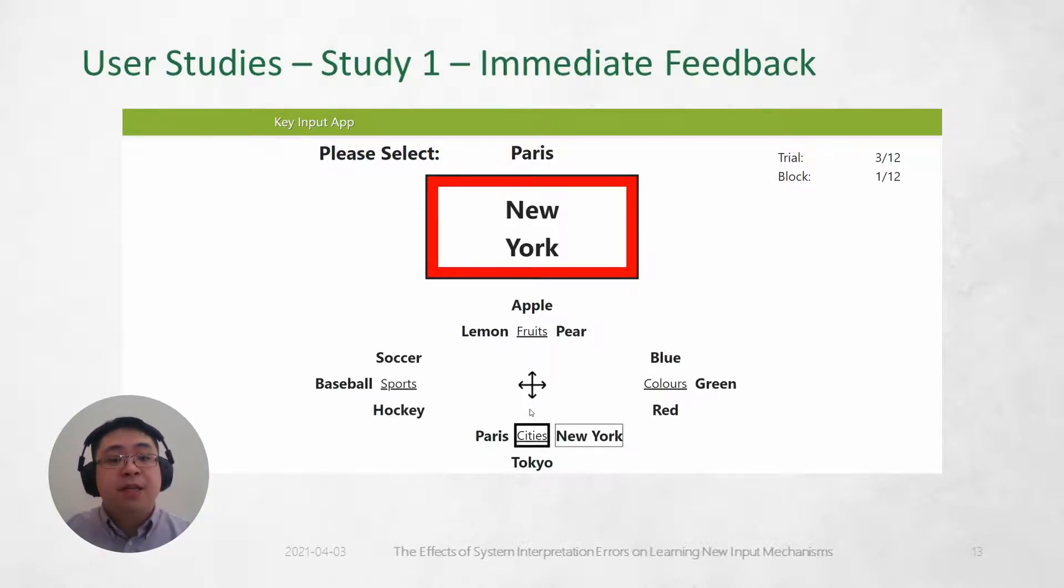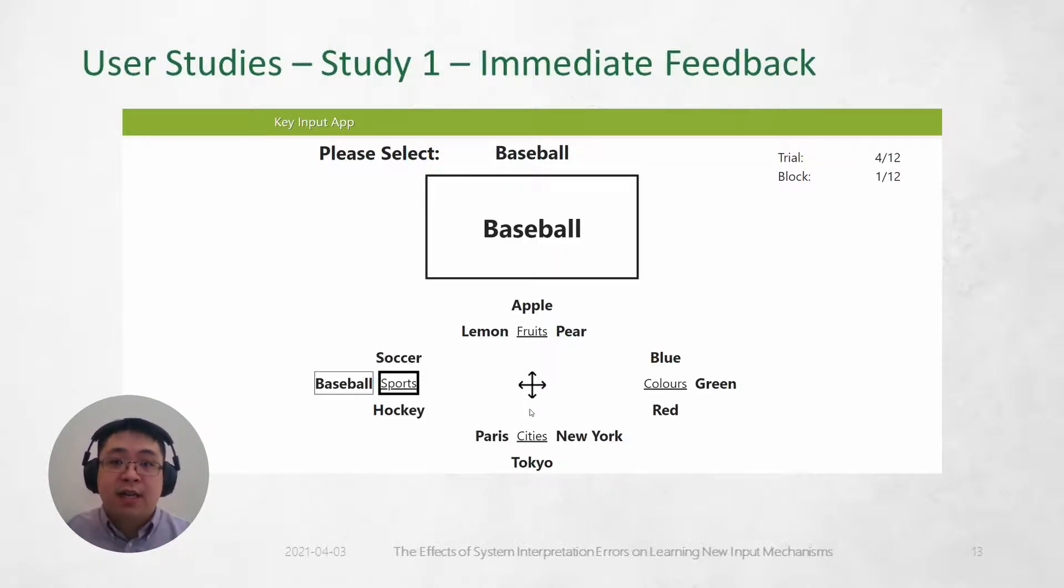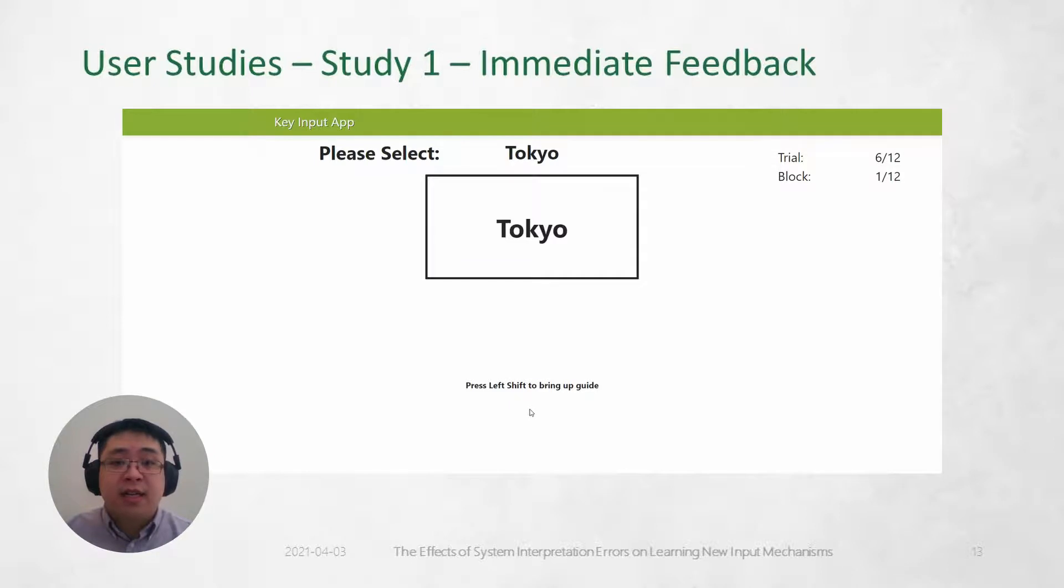In study one, participants were given immediate feedback about whether they correctly selected the item or not. If it was incorrect, they would have to repeat the task again until they got a correct selection.